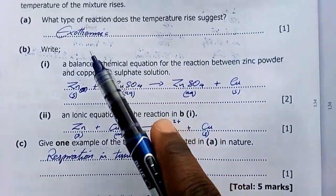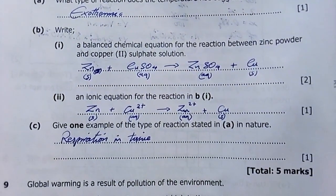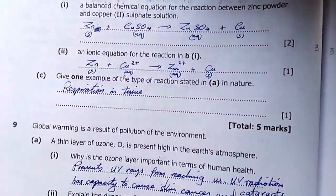Give one example of the type of reaction stated in A in nature. They've said exothermic. Respiration in tissue. You can even say combustion, respiration. They give out heat. They are exothermic in nature.